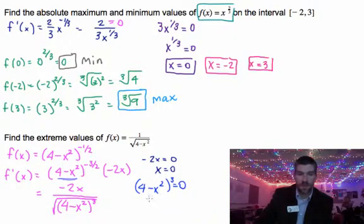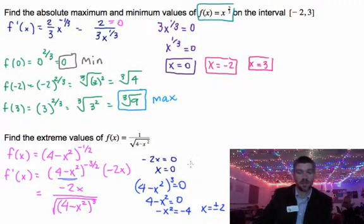So if you take the cube root of both sides, then you're going to have 4 minus x squared equals 0. So negative x squared equals negative 4. So x is going to be plus or minus 2.